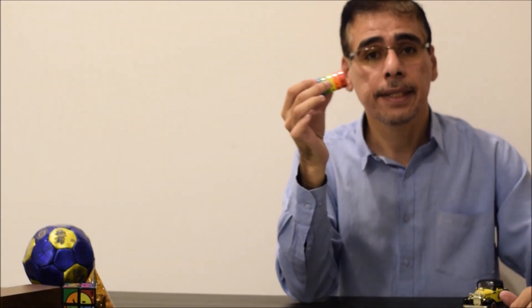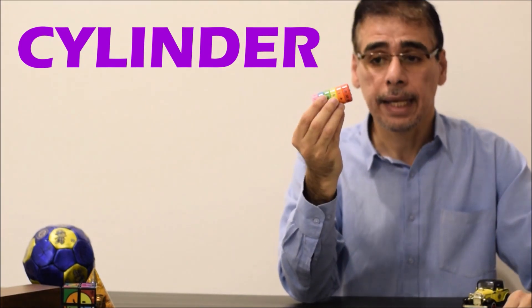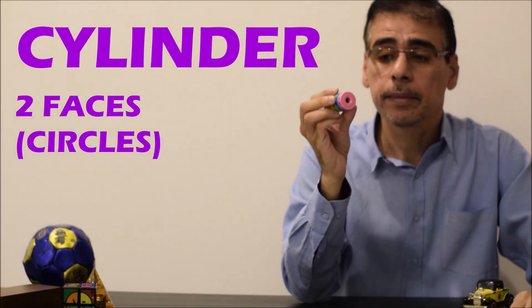Then, the cylinder. The cylinder looks like this. And it has two faces, which look like a circle.